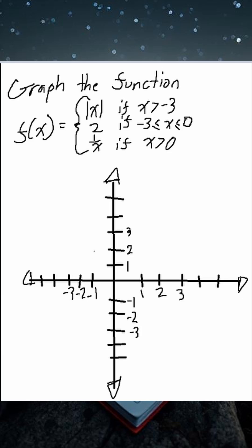Let's graph this piecewise function, which is defined by the absolute value of x if x is less than negative 3, 2 if x is greater than or equal to negative 3 and less than or equal to 0, and 1 over x if x is greater than 0.